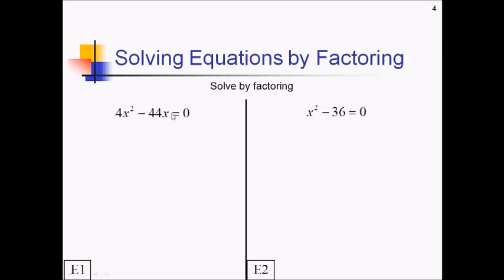This first one, we can take out a 4x as a common factor. That'll leave us with x minus 11 inside. And then setting each of these equal to zero, we've got 4x equals zero, x minus 11 equals zero. So over here on the left, that means x is going to be zero, or x could be 11.